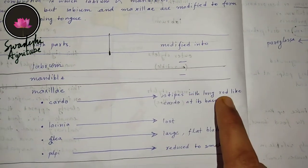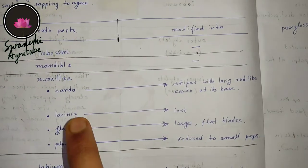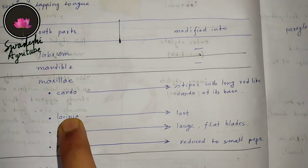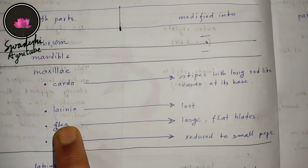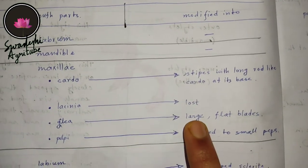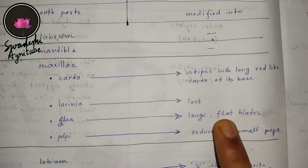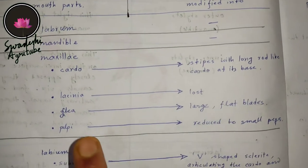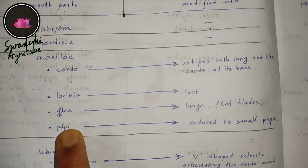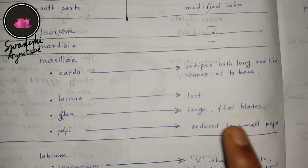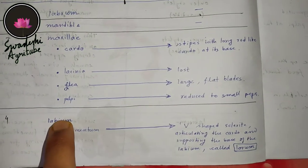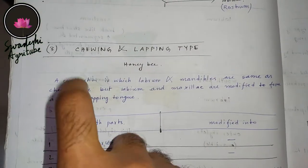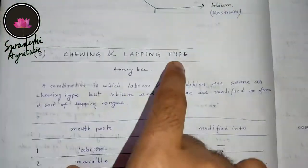Talking about lacinia, it is actually lost. Talking about the galea, you can see that it becomes large and flat. Now talking about the palp, it is reduced to small pegs.